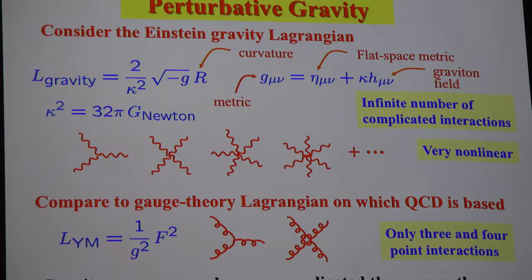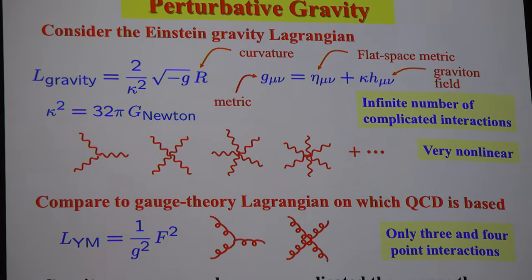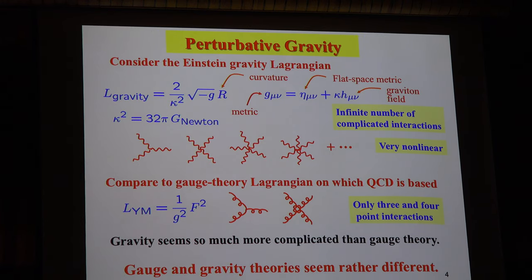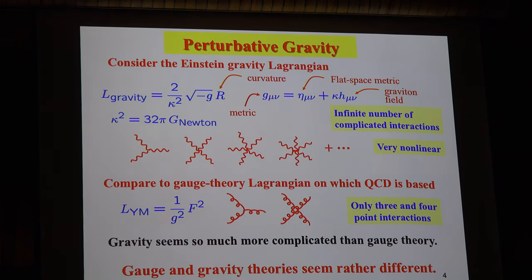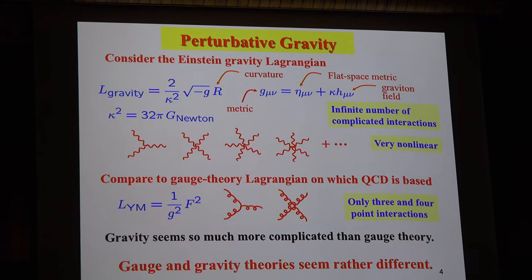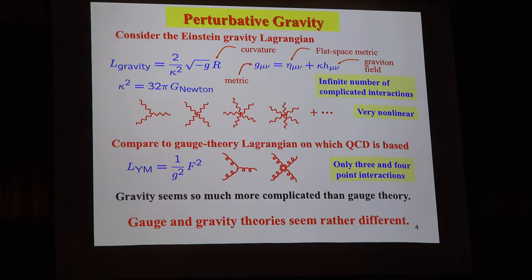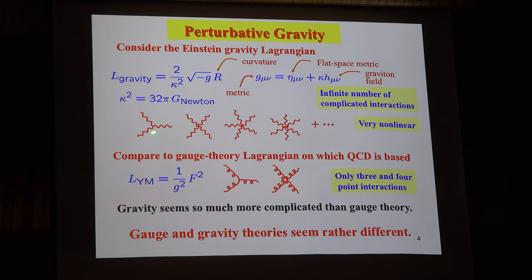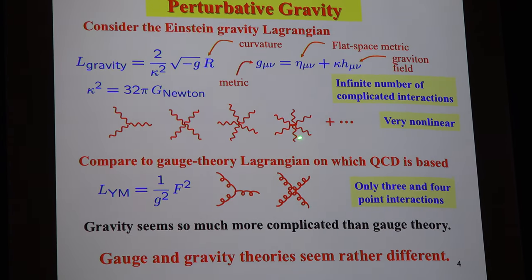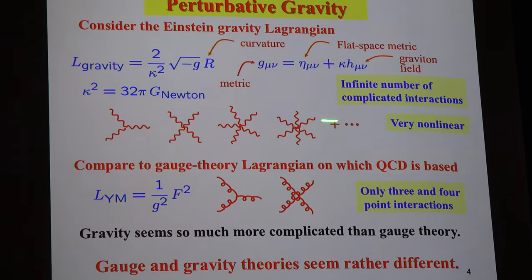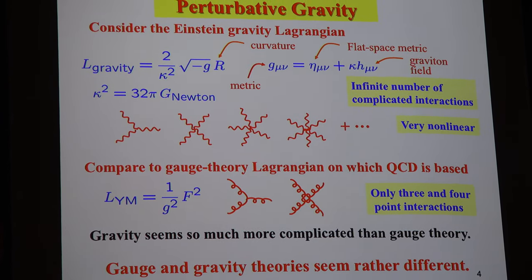So what are the complications? It's basically that gravity's a mess — that's the complication, and it doesn't take long to find it. What you do is take the Einstein-Hilbert Lagrangian, take the metric, expand it around flat space or some background, plug it in, and work out the series expansion in terms of the gravitational field. What you find in terms of Feynman diagrams is an infinite set of interactions — three-point, four-point — and these get horrendously complicated.